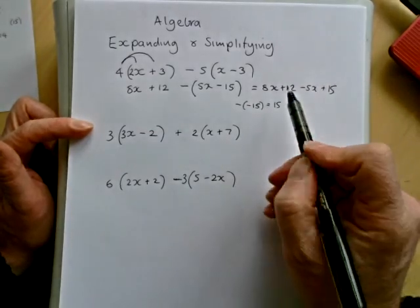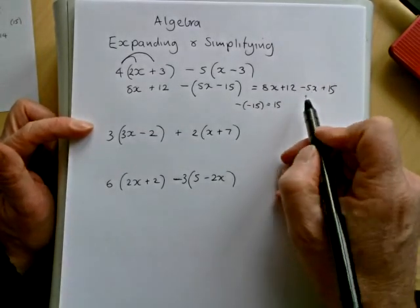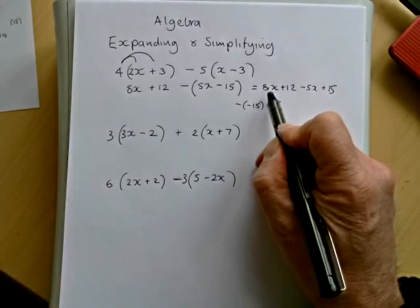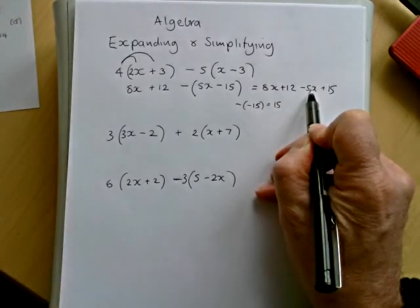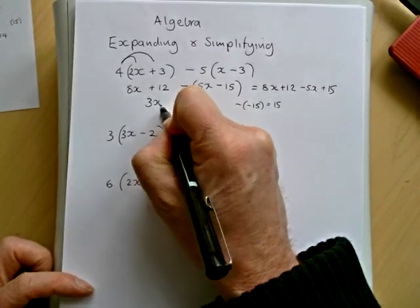So we've got 8x plus 12 minus 5x plus 15. So we'll look at the x's. We've got 8x minus 5x, so I'll write that over here as 3x.